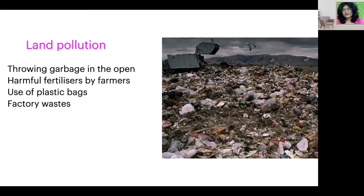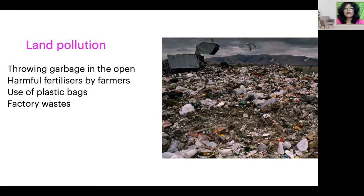Coming to land pollution, how can the land that we stay in get contaminated? By throwing garbage in the open. Harmful fertilizers used by farmers can damage the soil and the little organisms that are in the soil. The use of plastic bags is a problem because plastic bags don't get degraded, so the government has banned plastic and we are asked to use cloth bags. Factory waste gets dumped into the land, damaging the land, damaging the plants that grow in it, and even the food that we consume coming from those plants is harmful to our body.